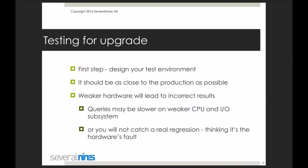The test environment should be as close to production as possible, and there are many reasons for that. If you have different hardware — slower drives, slower disks, slower CPU, less memory — the results you get from those tests may not be relevant to your production environment. Queries may appear slower simply because of the slower IO or CPU.